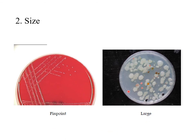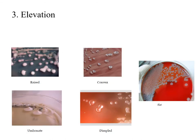In this plate, we can see different colors and sizes of colonies. The elevation of a bacterial colony may be raised, convex, flat, dimpled from the middle, or umbonate with an elevation in the middle of the colony.